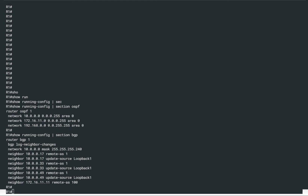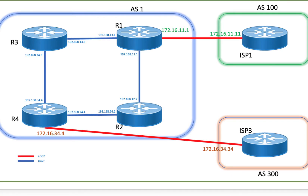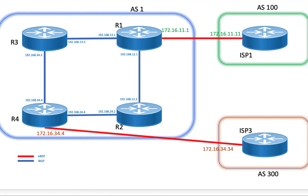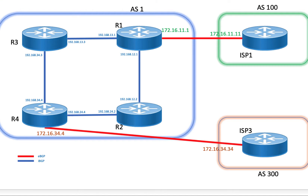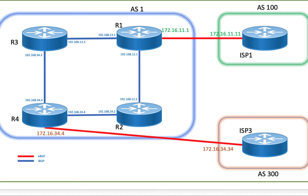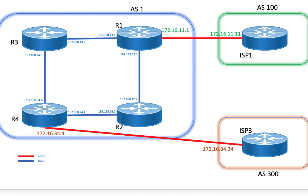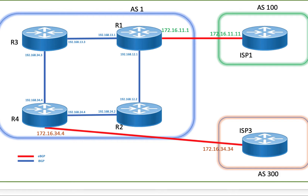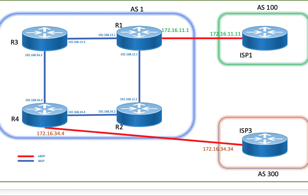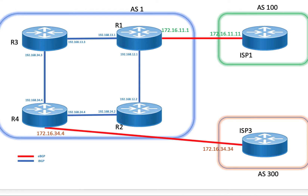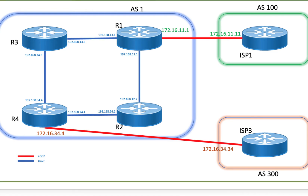For this demonstration, we are using a slightly different topology. In this topology, you can see there are three AS: AS100, AS1, and AS300. Within AS1, we have a couple more routers, and we'll see why we need a full mesh within an autonomous system. The red lines indicate eBGP sessions — between AS100 and AS1, and between AS1 and AS300. Within the AS, we have an iBGP session between these routers, and for reachability, we are running OSPF as our IGP.